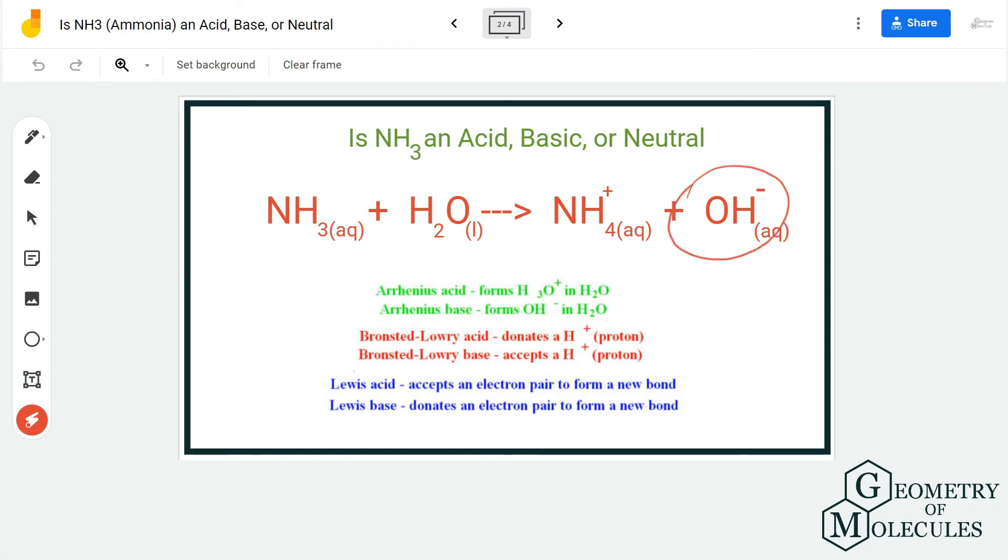It becomes a Bronsted-Lowry base because it accepts an H plus proton, as I mentioned. These two theories can help you find out that it is a base because it accepts protons and there is a formation of hydroxide ion in this equation.